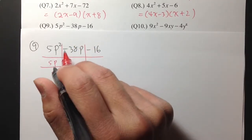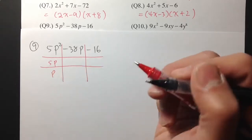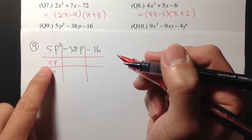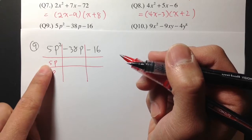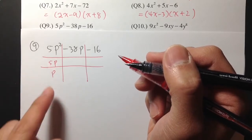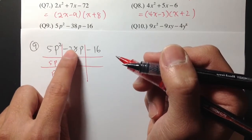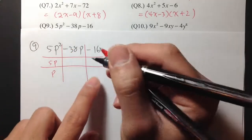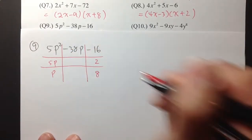I need to produce a negative 38. And I mentioned 8 earlier. Notice that right here I have the 5p. 5 times 8 will be 40, and that's pretty close to 38. So let me put the 8 right here and the 2 right here.